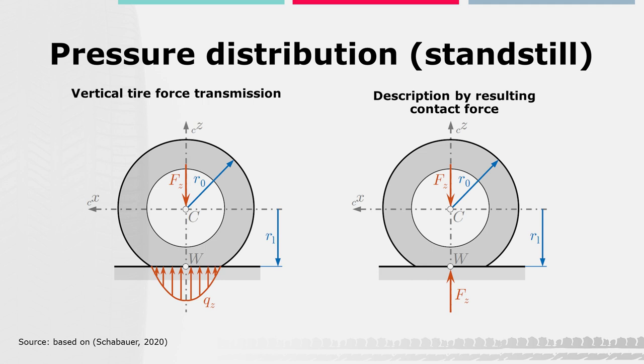From many vehicle dynamics applications, the vertical pressure distribution can be simplified to a description by a resulting contact force, which, in this case, acts in the wheel contact point W. This simplification is shown on the right figure. That's it for now, we will continue in a second part.